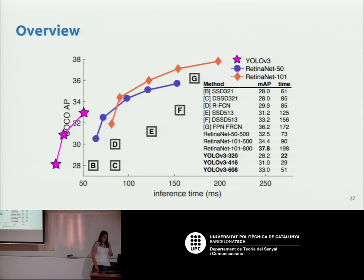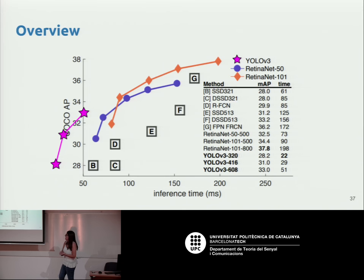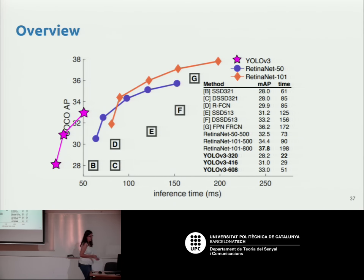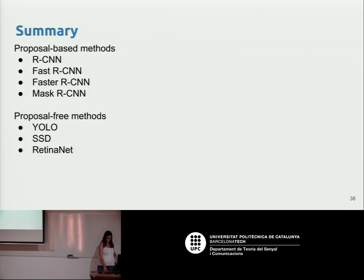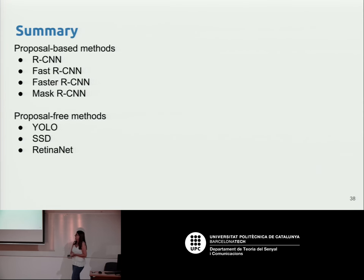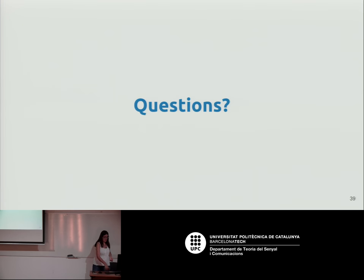Finally, here you can see a graph of average precision on the COCO dataset in relation to inference time. YOLO is the fastest option if speed is the priority, but for the best performance RetinaNet is preferred. This summarizes the distinction between proposal-based and proposal-free methods, and that's all — thank you, any questions?